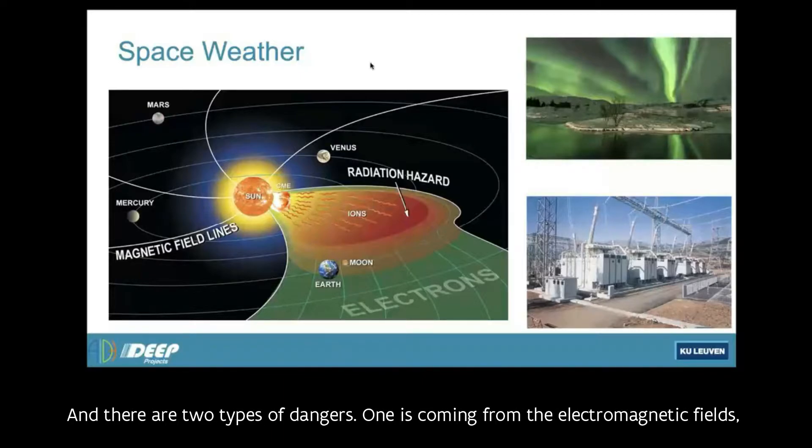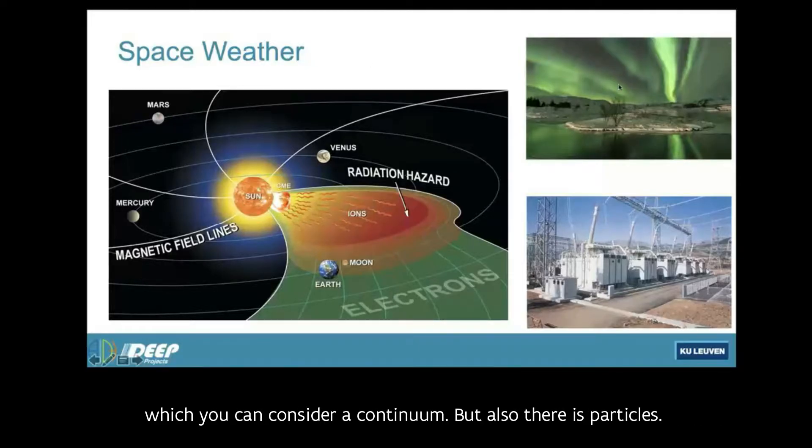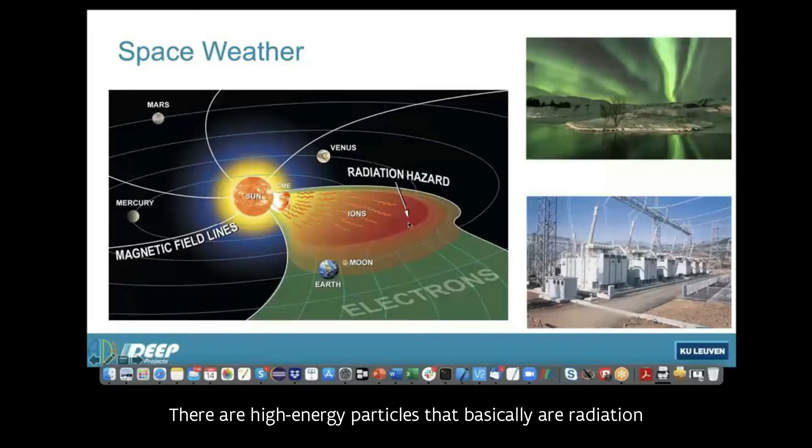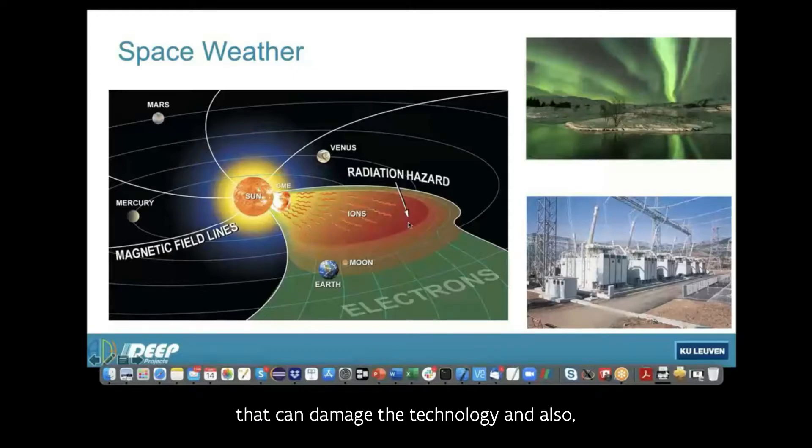There are two types of dangers. One is coming from the electromagnetic fields, which you can consider a continuum. But also there are particles, high energy particles that basically are radiation. They can damage the technology and also damage the cells of the body of the astronauts.